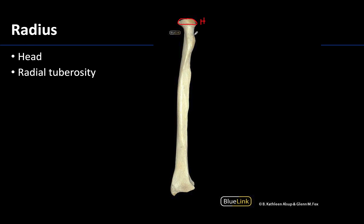Just distal to the head of the radius is a buildup of bone called the radial tuberosity. Anytime you have a mounding of bone, this typically means something — like a tendon or ligament — attached there during life, and greater muscle use causes more bony buildup. In this case, the radial tuberosity is the distal attachment of the biceps brachii muscle, allowing it to cross both the elbow and the proximal radial-ulnar joints, thus being able to affect actions at both.